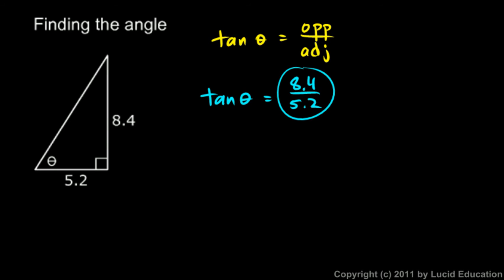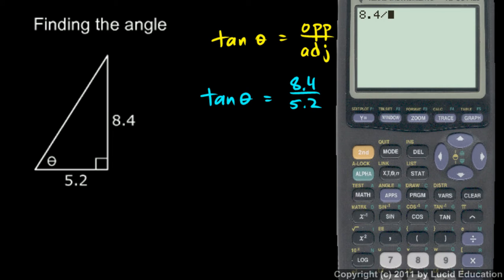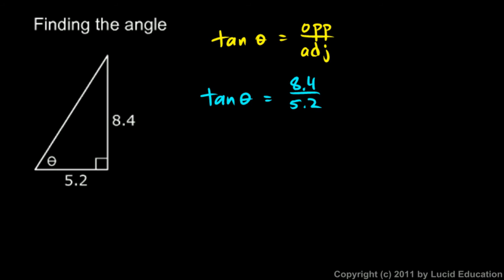If we do that on the calculator, if we divide 8.4 divided by 5.2, we get 1.6—let's round that to 1.615. So the tangent of theta is equal to 1.615.